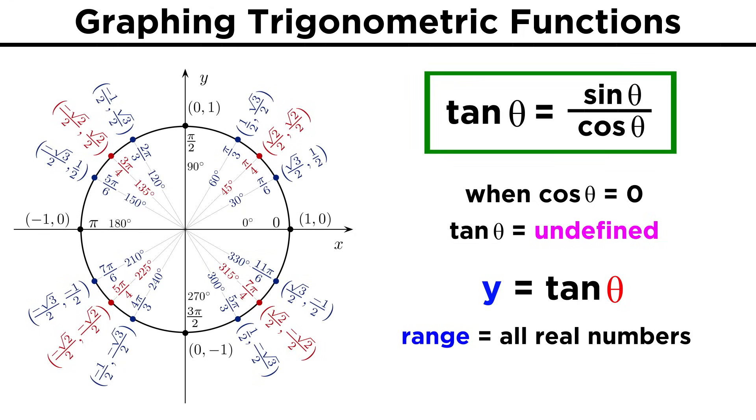The domain is almost all real numbers, but we can't evaluate tangent when cosine is zero, because anything over zero is undefined. Cosine is zero at half pi and three halves pi, so the domain of tangent theta is all real numbers except half pi plus or minus multiples of pi.